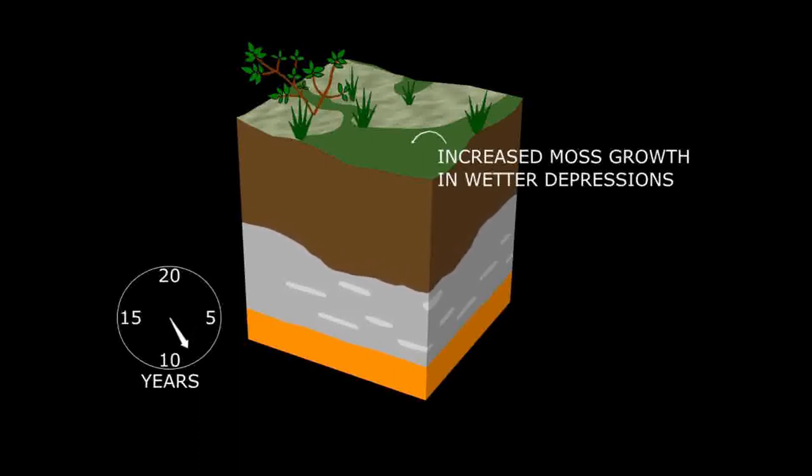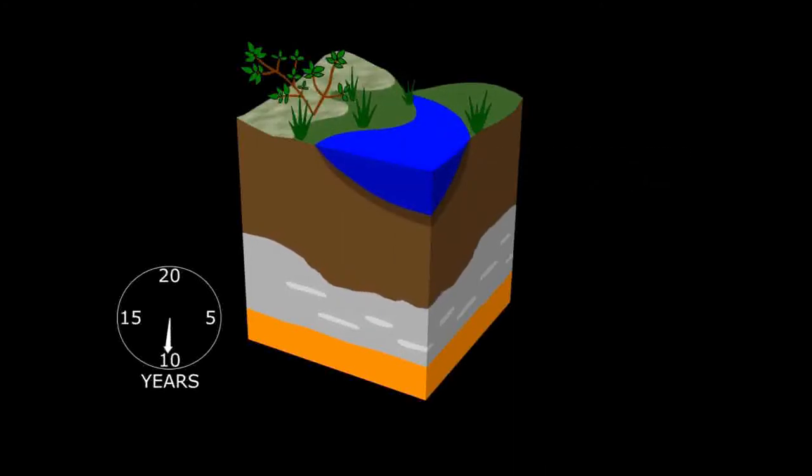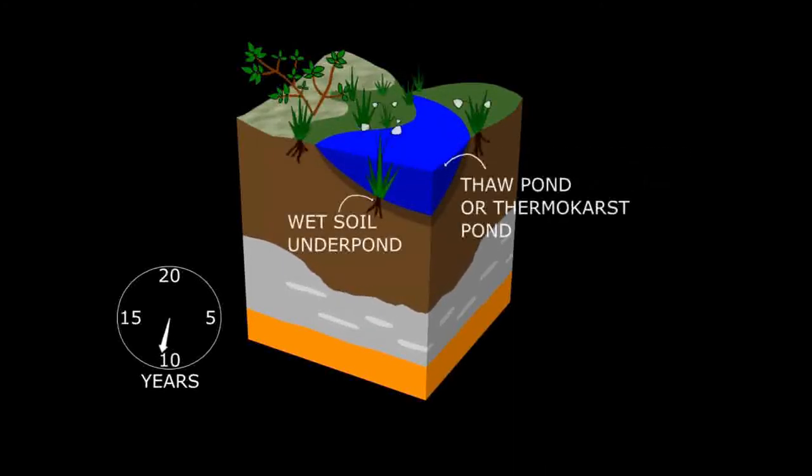As the climate warms further, plants with deep roots such as shrubs can grow. As more permafrost thaws, subsidence increases and ponds may develop in the wet hollows. These ponds are called thermokarst ponds.